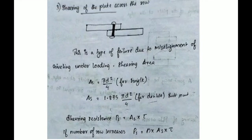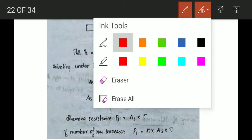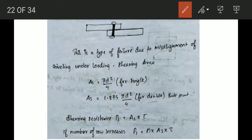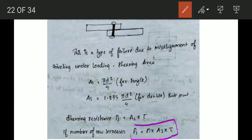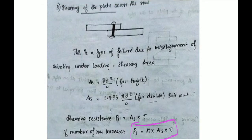We are learning shearing. The shearing resistance area As = πd²/4 for a single shear case. For double shear, it is 2 × πd²/4, which equals 1.875 × πd²/4. The shearing resistance is Ps = N × As × τ.